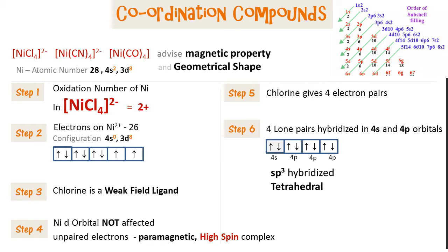The coordination number of this compound is 4. Each chlorine atom gives one lone pair of electrons, and these four lone pairs hybridize to form sp3 hybridized orbitals, giving the compound a tetrahedral geometry.